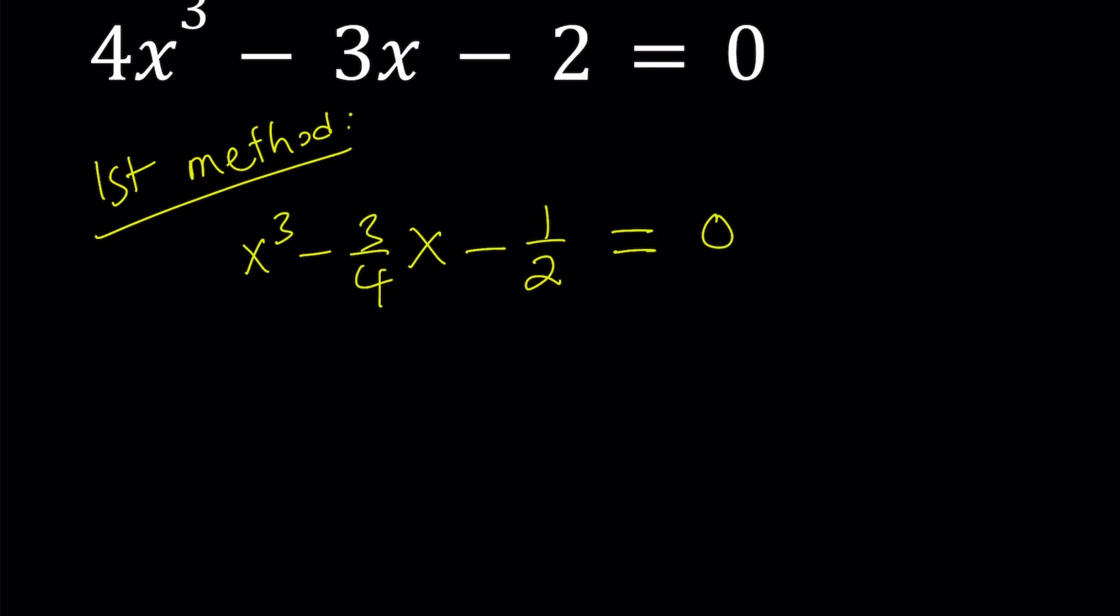Now we're going to be using Cardano's formula, but I'll explain the process so it's fairly easy to understand. It's a really powerful method for solving cubic equations. But in order to be able to use the method, we do need the coefficient of x squared to be 0, and it is already 0. So that's good. If it wasn't 0, we could use substitution to get rid of the x squared term. Alright, so here's what we use.